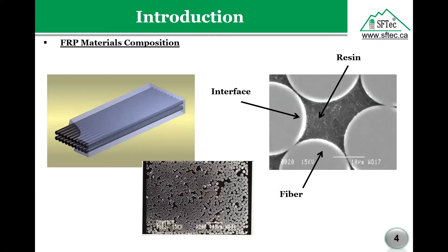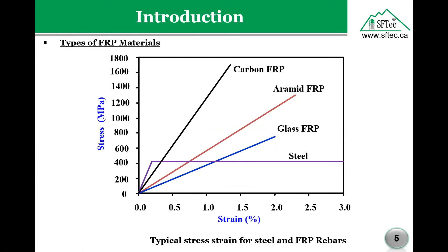What is FRP? Basically FRP — if you put FRP under the microscope, you will see that it's mainly fiber, which could be glass or anything else, reinforcing a polymer. You'll see here the resin and the interface between the fiber and the resin. FRP stands for fiber-reinforced polymer, and it comes as a non-corrosive alternative to steel. There are many different types of FRP; the most popular are glass, basalt, and carbon.